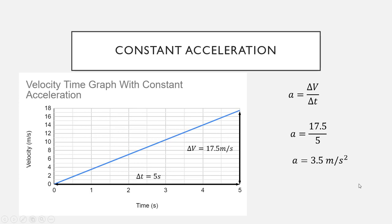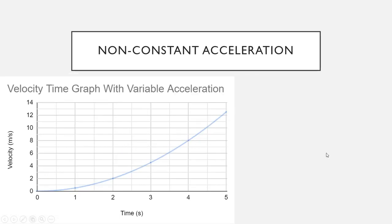Putting that into a calculator, the acceleration is 3.5 meters per second squared. Because it's a constant acceleration, at any time it's always going to be 3.5 — that's simply the acceleration of our system. The next case is non-constant acceleration, where things are a little different. We can only find the acceleration at specific points — for example at one second, two seconds, or three seconds — and these would all give different numbers. For this example we're going to look at a time of two seconds.